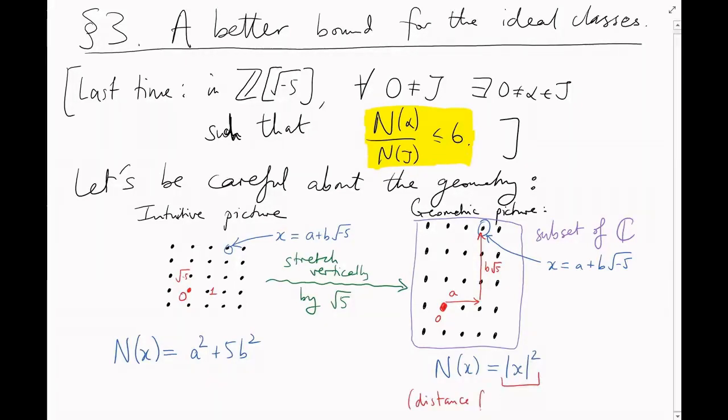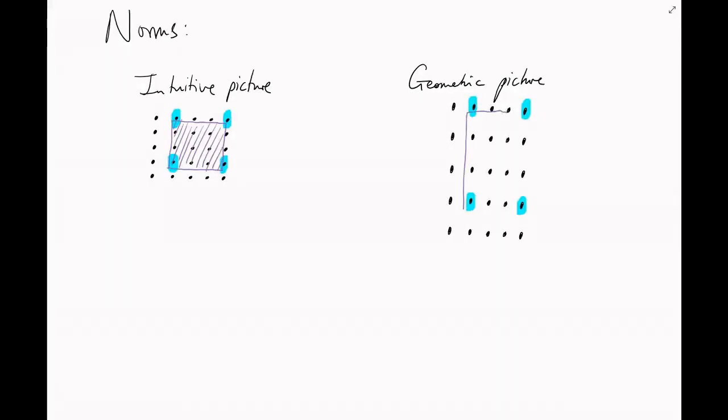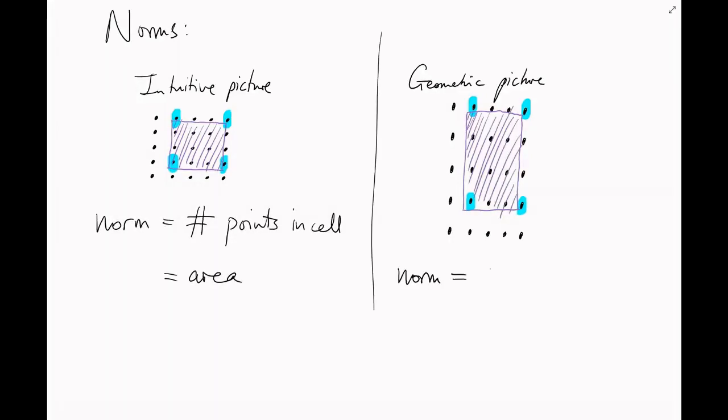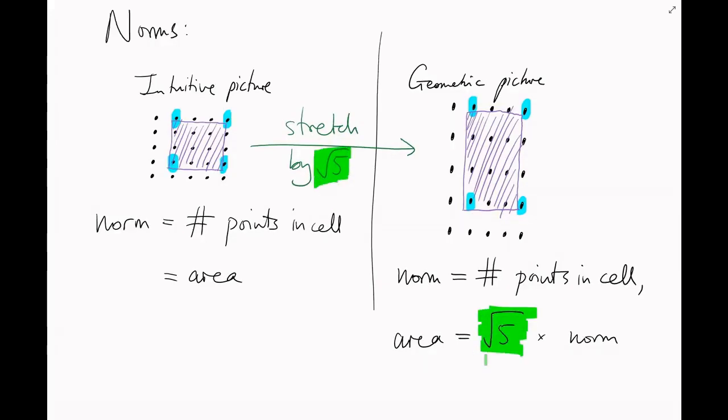And we have to be a little careful about what we mean by the norm of a sub-lattice j, too. We said that the norm was the number of points inside a cell, or it was the area of the cell. Well, now the number of points hasn't changed, but the area has stretched by a factor of root 5. So I'm going to say that the norm is the number of points in a cell, and the area is root 5 times the norm of j over in this picture.